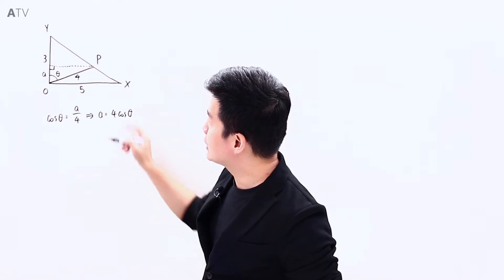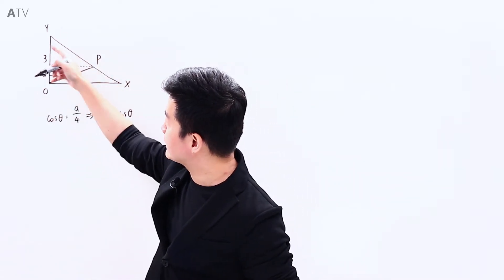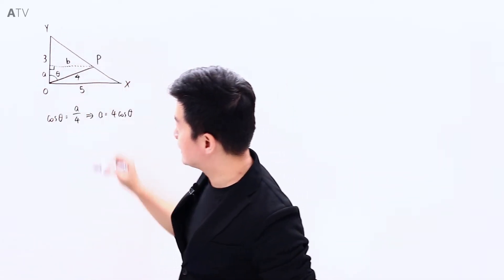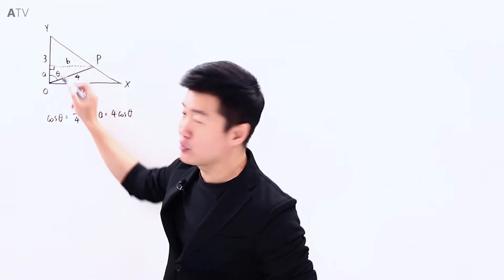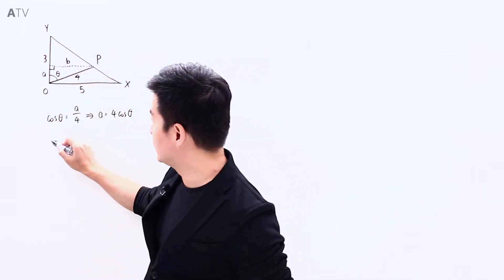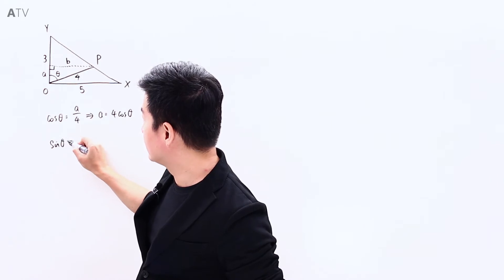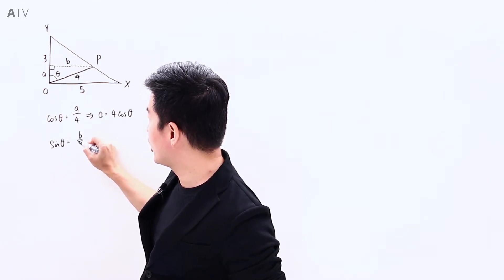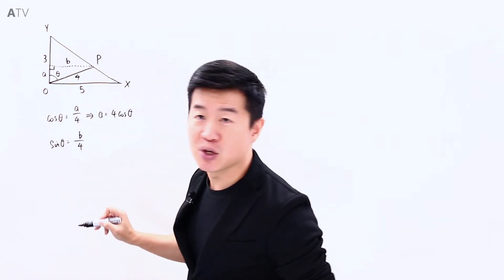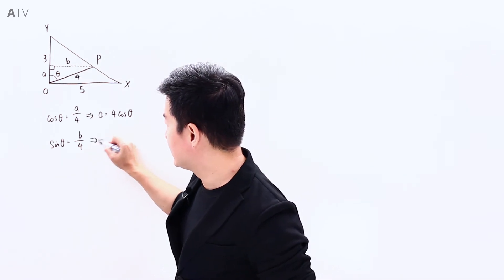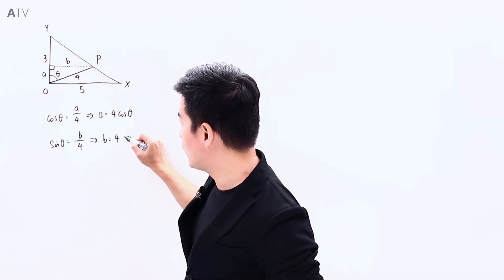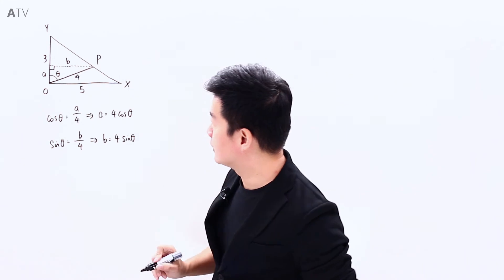And if I want to work on the distance of P to OX, let's say that distance is B. Again, making use of this right-angled triangle, we know that sine theta is going to be B opposite over the hypotenuse, B over 4, which means that B is going to be 4 sine theta.